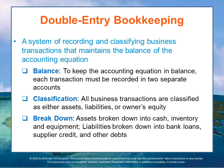For example, assets may be broken down into specific categories like cash, inventory, and equipment — often called property, plant, and equipment, or PP&E. While liabilities might include bank loans, supplier credit, or other debts.